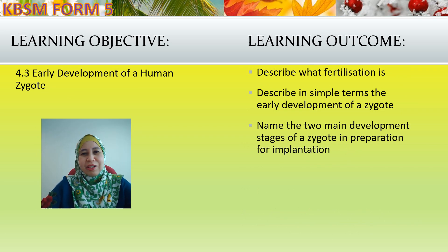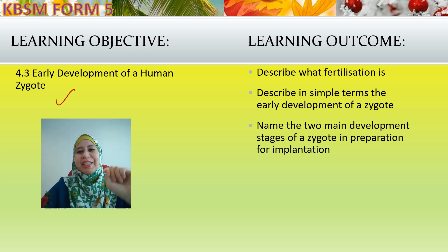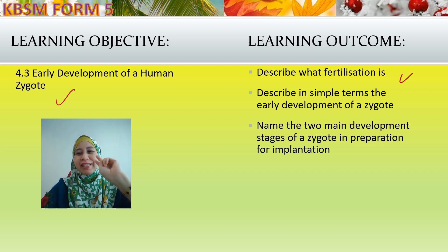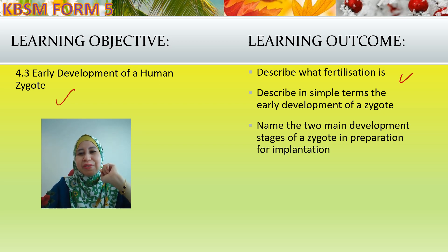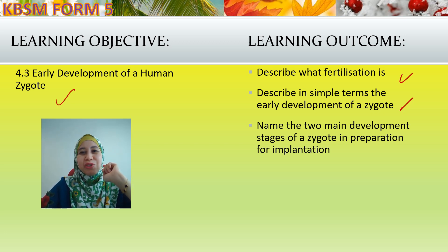The learning objective under KBSM Form 5 is 4.3 — Early Development of a Human Zygote. The learning outcomes are: first, describe what fertilization is; second, describe in simple terms the early development of a zygote; and third, name two main development stages of a zygote in preparation for implantation.